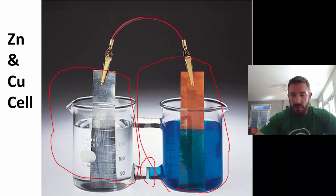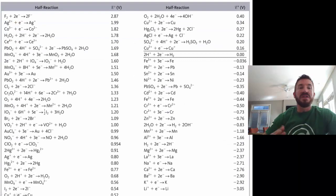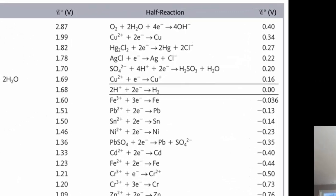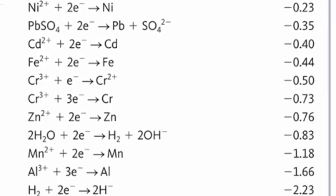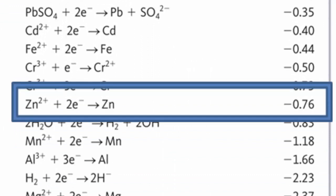How do you figure out how the cell works? Well, quick review. What we want to first do is look at a reduction table. We want to find both of these on the reduction table. So first, we find the copper. I see the copper has a reduction value of 0.34 volts. And then I want to look up the zinc value. And the zinc value is negative 0.76 volts. Now, hopefully you remember — this is the reduction table. Everything is gaining electrons, reduced.